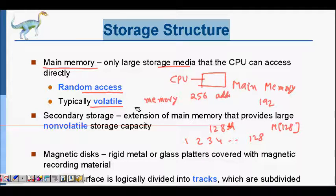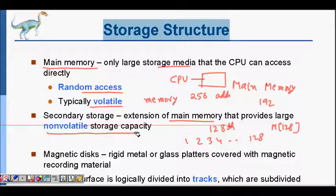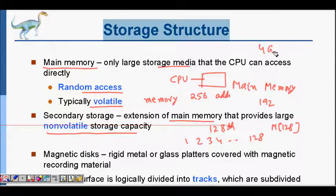RAM is typically volatile. What does that mean? If you switch off your RAM, everything goes off — nothing is stored, no state information will be stored. Then we have secondary storage, which is larger — it is an extension of the main memory that provides large non-volatile memory. If you switch off your computer, whatever was on your hard disk is not lost.